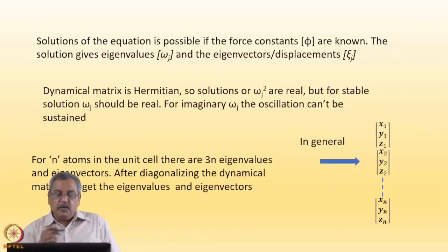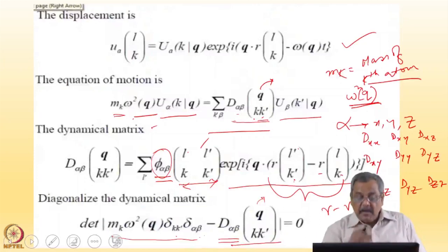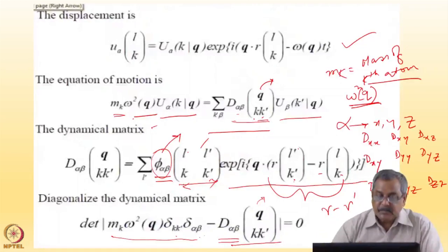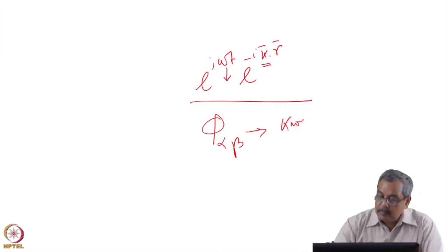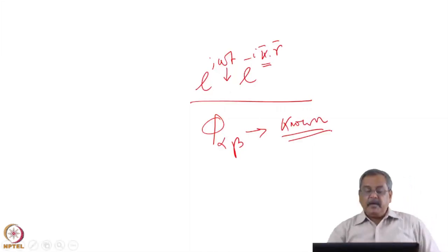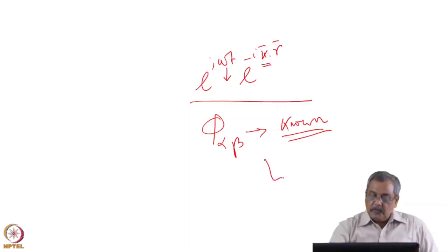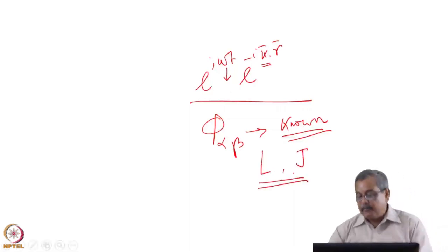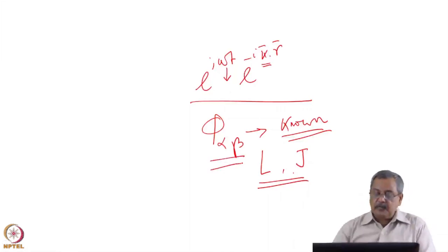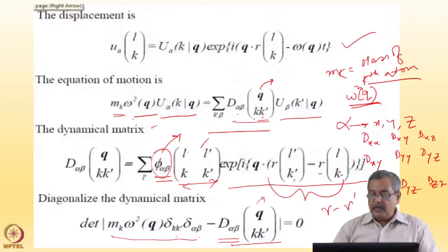Now the solutions. We are trying to solve this equation — the force constants need to be known. If we have to do a phonon calculation, the force constants must be known, because only then can we do a phonon calculation. We can use various models for the force constants — we can use a Lennard-Jones potential, which is known to all of you. If there are ionic solids, then we use an ionic potential. We need to know the force constants between the atoms to solve the dynamical matrix and find the eigenvalues and eigenvectors.